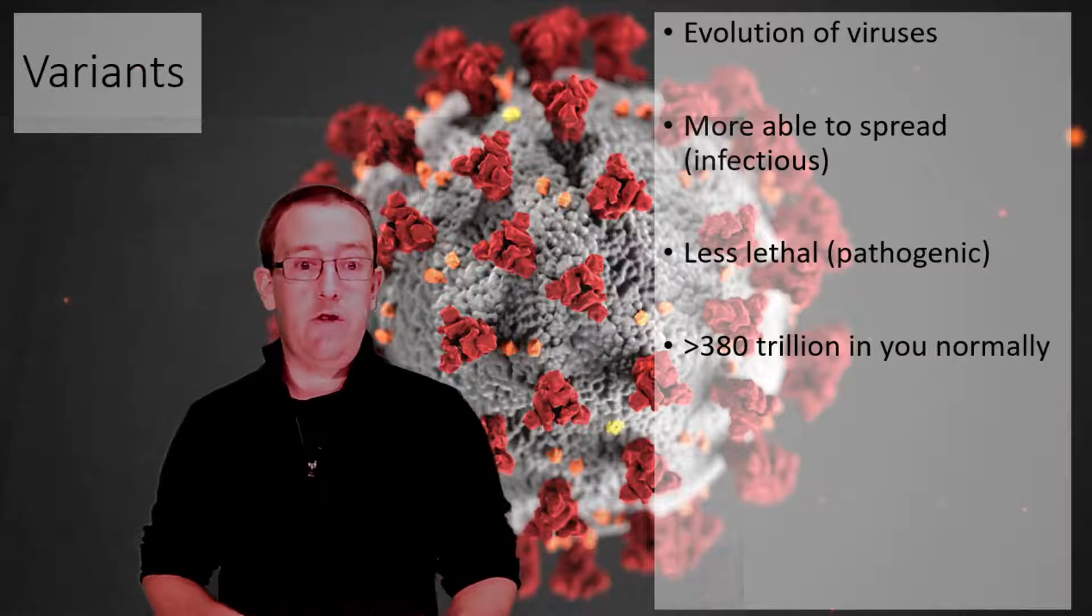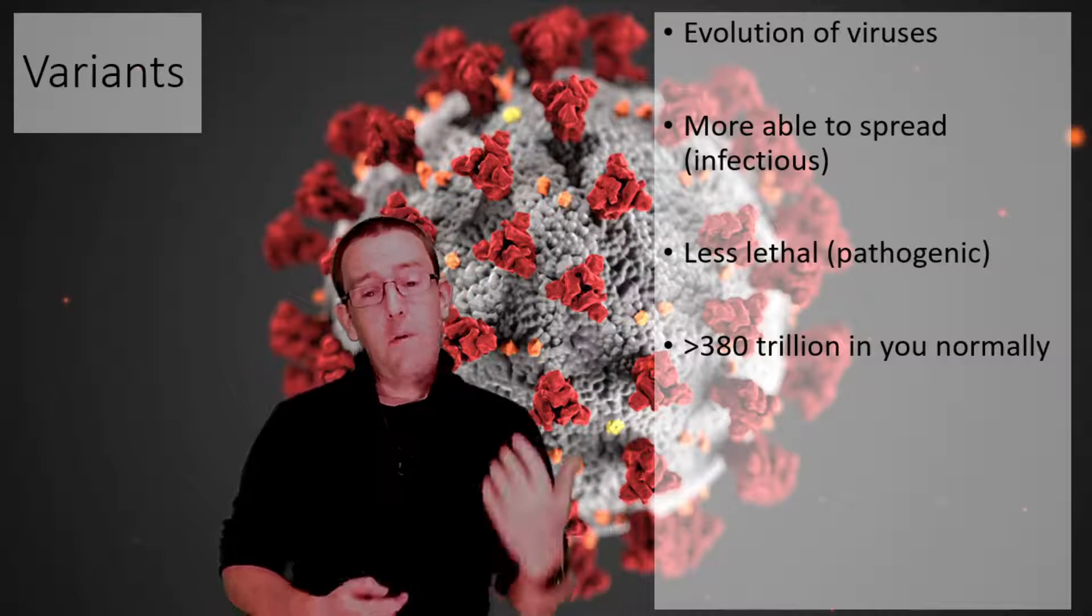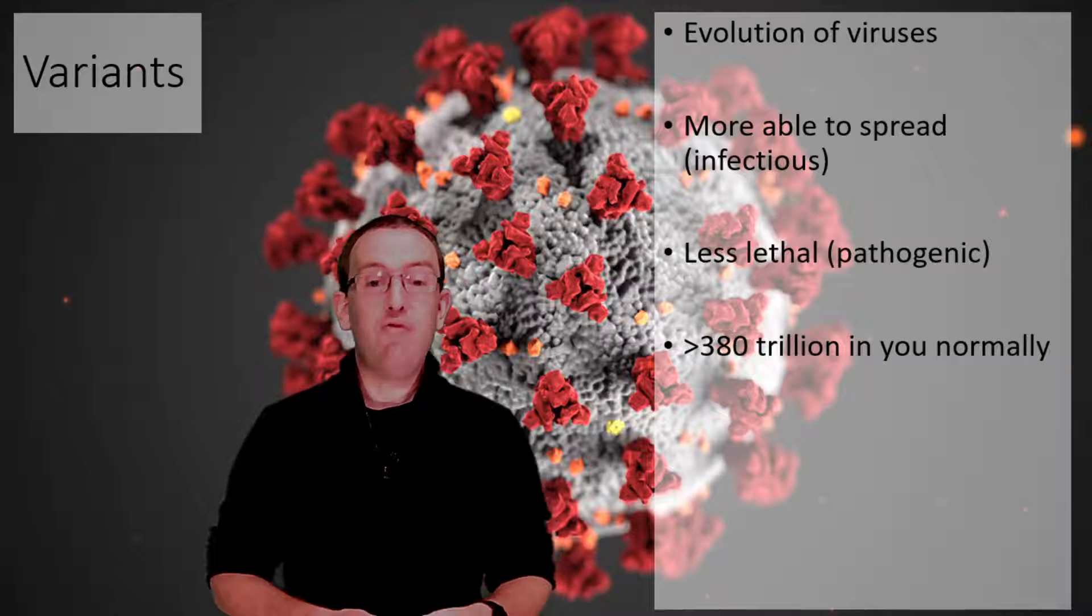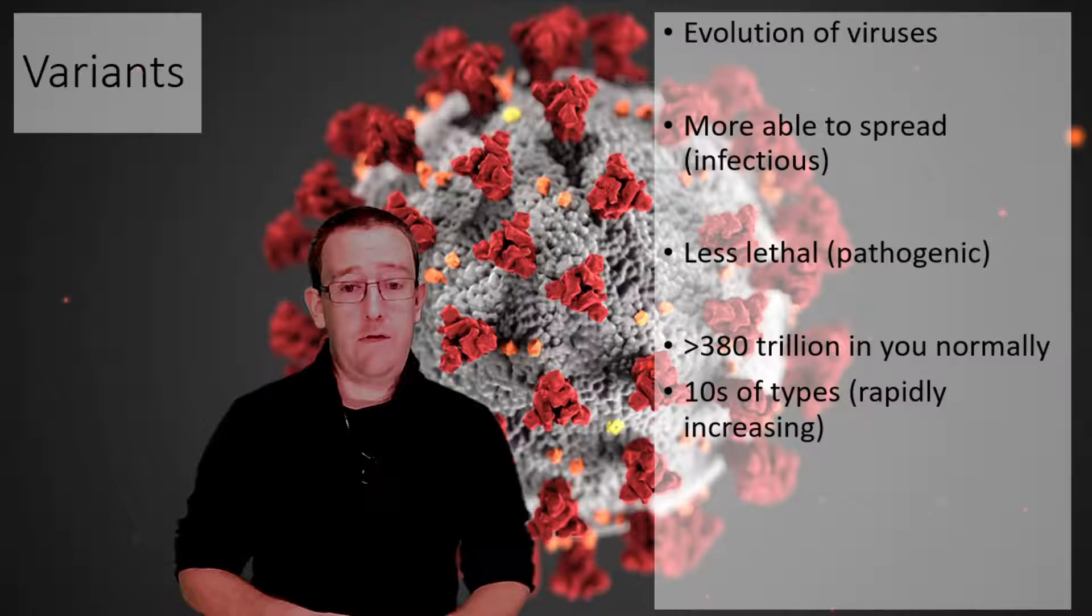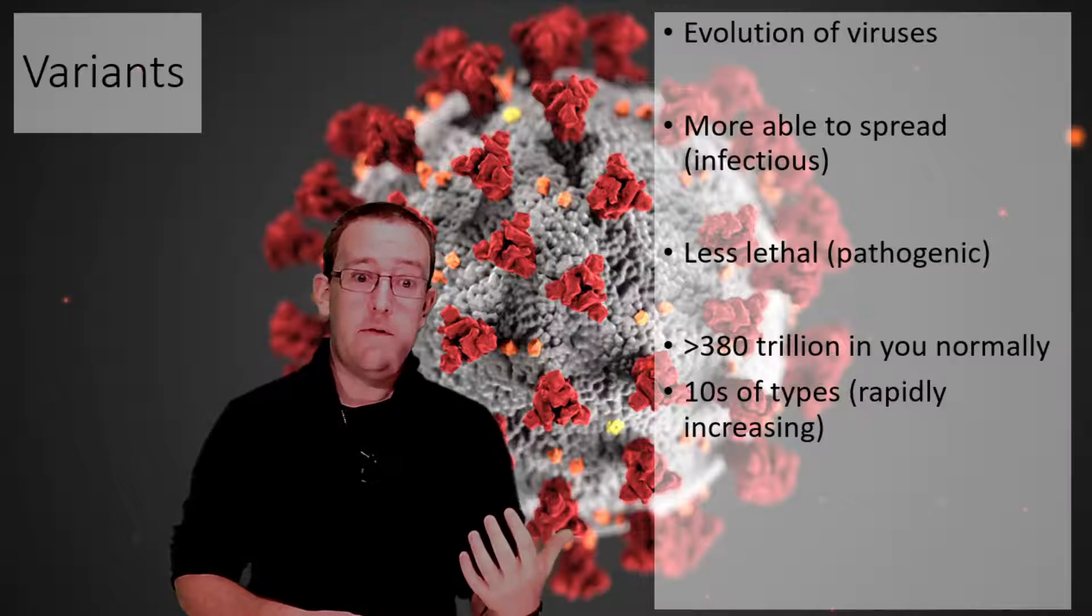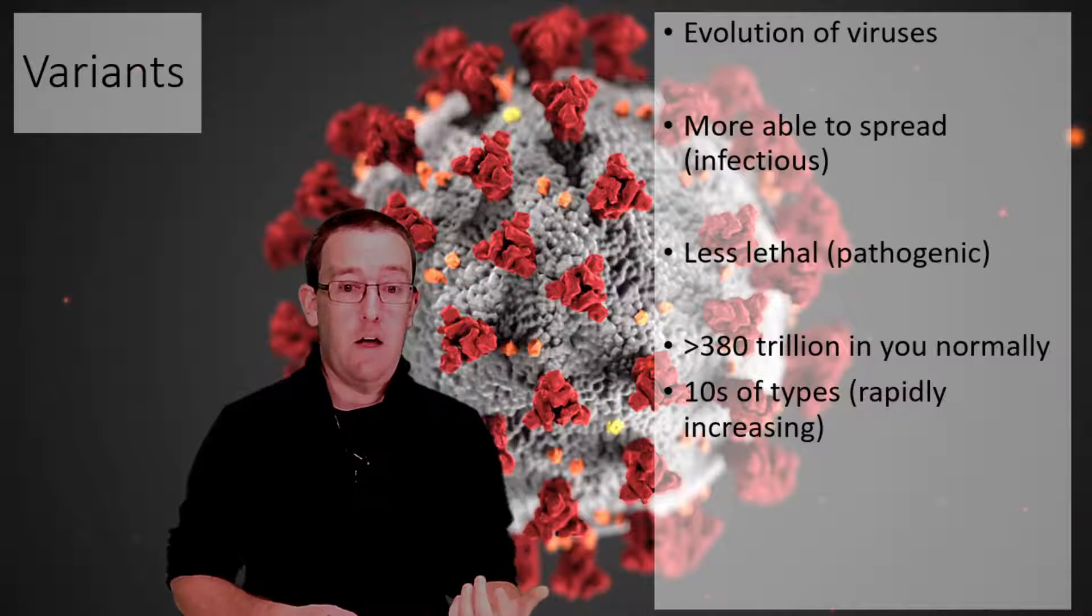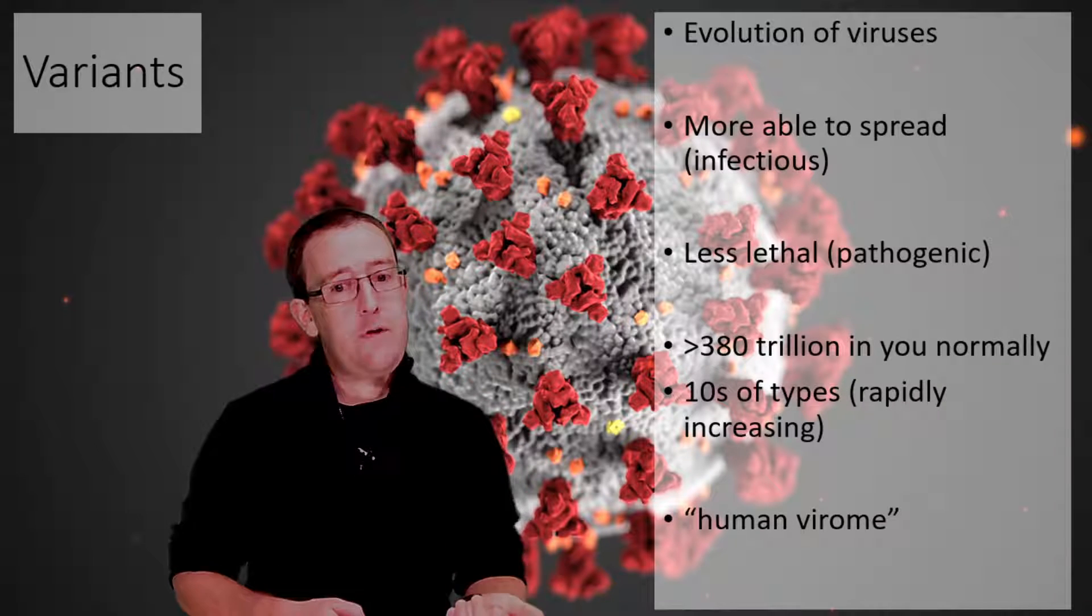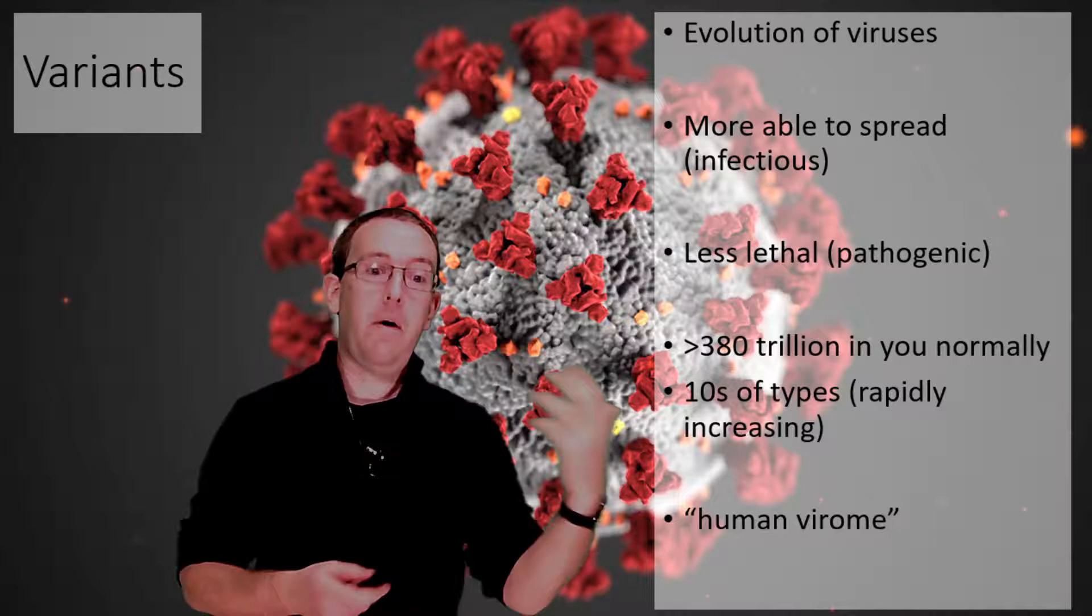If you count them up, and there's recent research into human virology, we've got about 380 trillion virus particles in you as an average. There are tens and tens of types, and the number is rapidly increasing as we discover more. It's called the human virome, like a genome or proteome or microbiome.